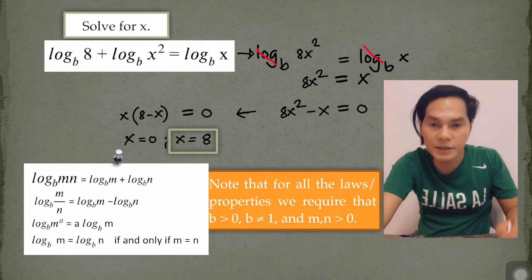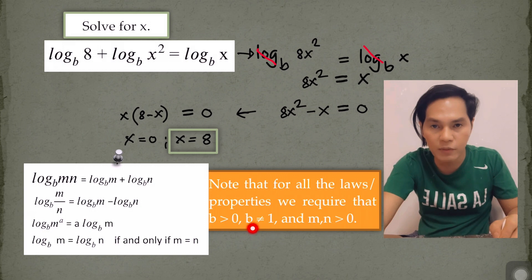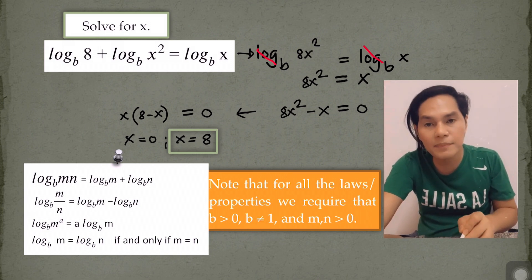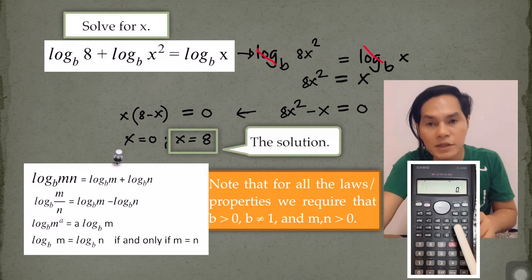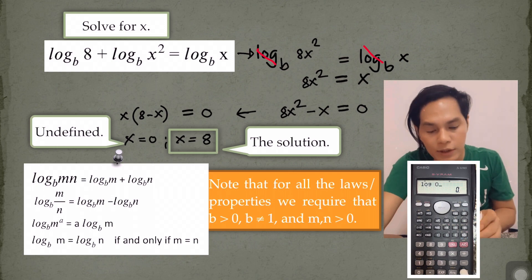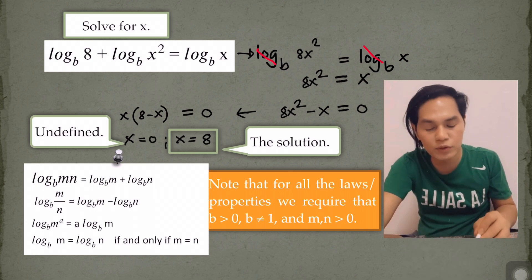Because when we consider the properties or the laws, we require that b should be greater than 0. It should not be equal to 1. Otherwise, that becomes undefined. Because the logarithm of 0 is undefined. So our final answer here, which is the solution, is 8.